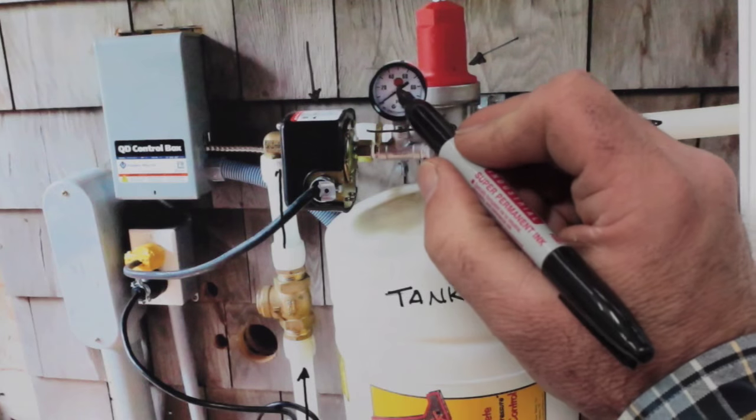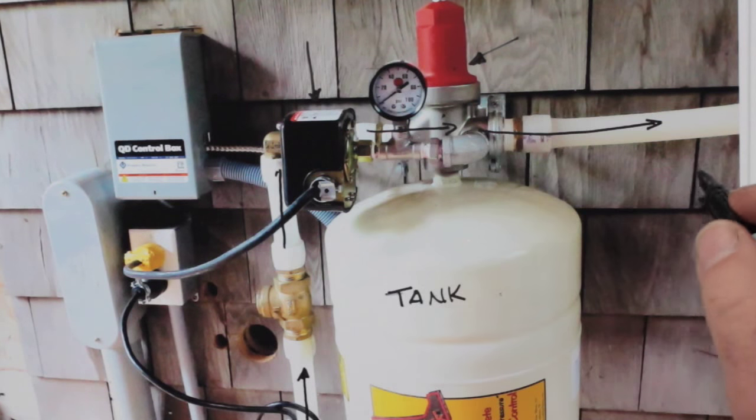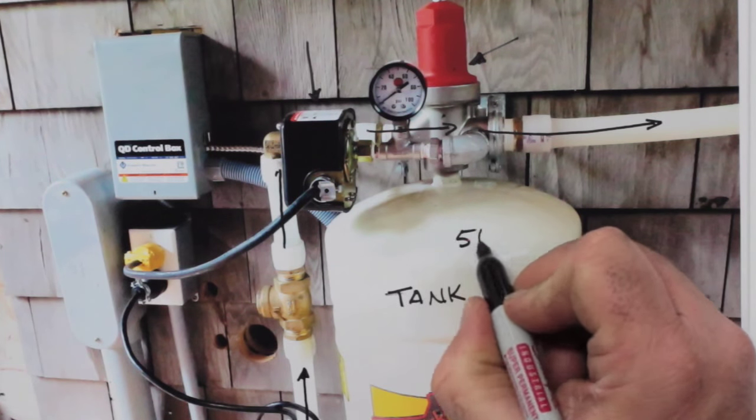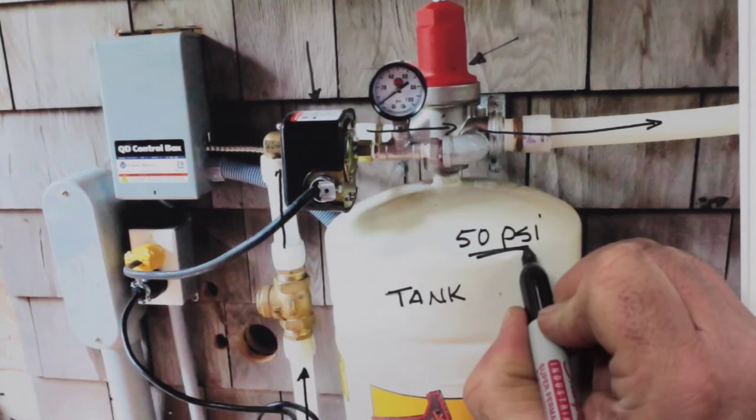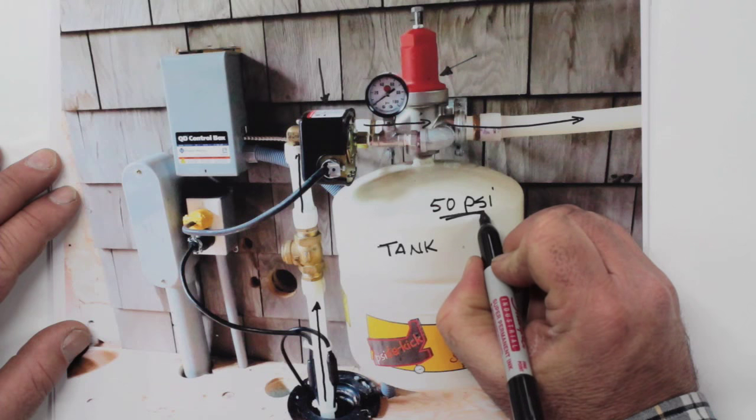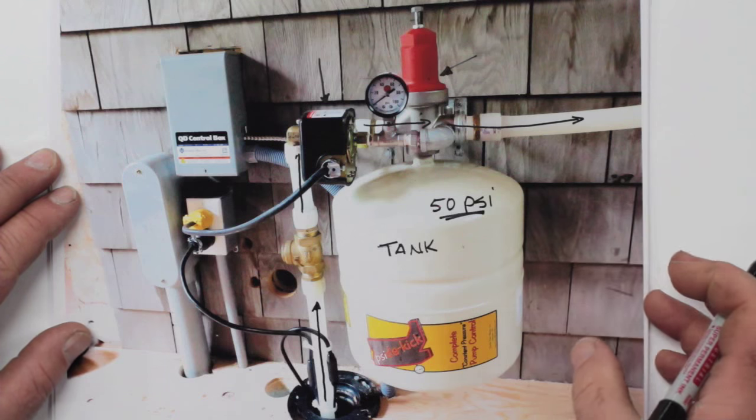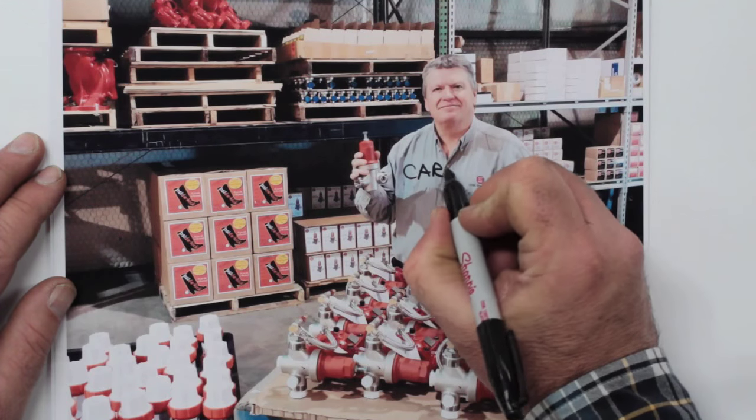Now in practice, the value of the cycle stop valve is that it holds water pressure at your taps and fixtures at a constant 50 pounds per square inch. The pump runs continuously and the idea comes from a guy that you see here. His name is Kerry Austin.